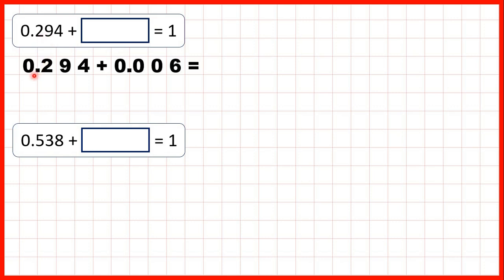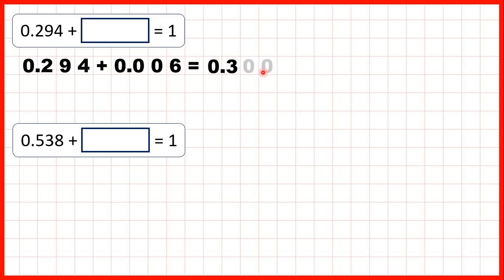So if we start at 0.294 and first add 0.006 — so 6 thousandths — that gives us 0.300, just as 294 plus 6 equals 300. But we don't usually write zeros on the end of decimals, so we have 0.3.